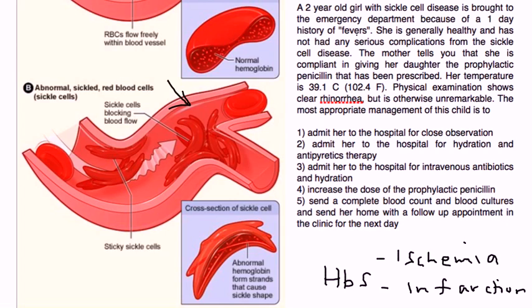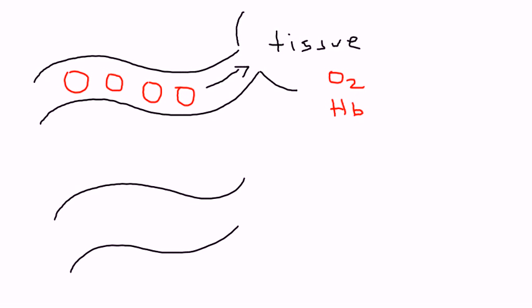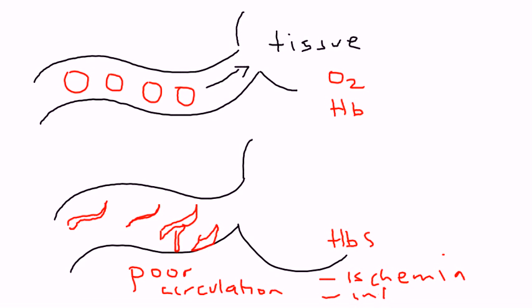That's a fundamental definition of what's going on in sickle cell anemia. It's important to understand the pathophysiology. In a normal case, the red blood cells would be nice and round and able to flow to the tissue and provide the oxygen that sits inside the hemoglobin molecule. But in sickle cell anemia, you've got a mutant hemoglobin, and that causes these red blood cells to be sickle-shaped. That can cause poor blood flow and poor circulation, because they clump up and stick to the sides of the blood vessel, leading to ischemia and eventually infarction.